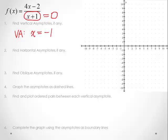Then we look for horizontal asymptotes. The degree of the numerator is 1, and the degree of the denominator is also 1. So the horizontal asymptote, y = something, is the leading coefficient of the numerator, which is 4, divided by the leading coefficient of the denominator, which is 1. We end up with y = 4.